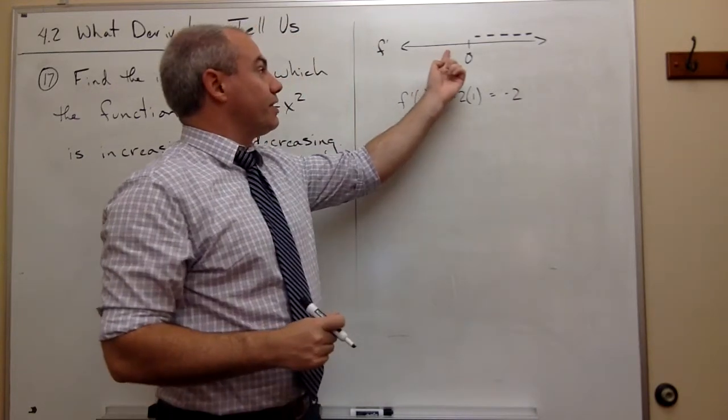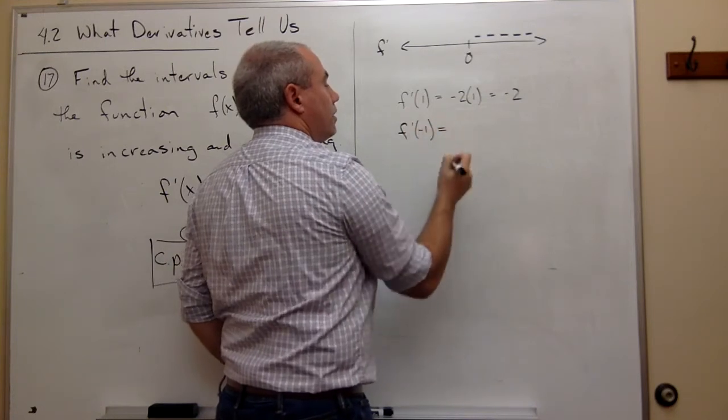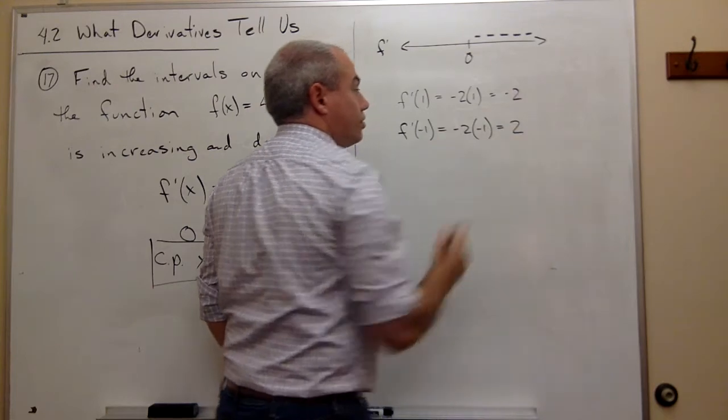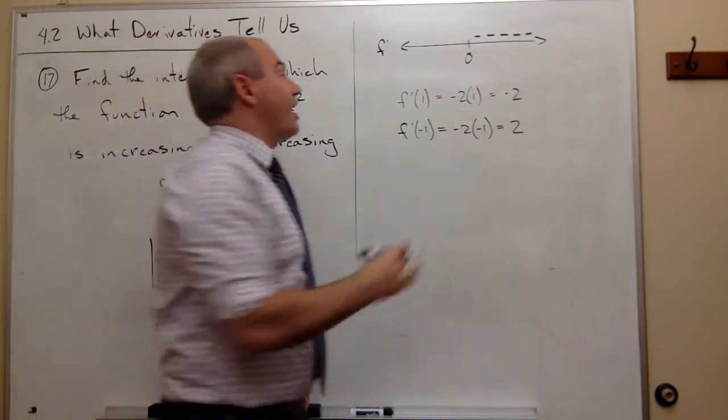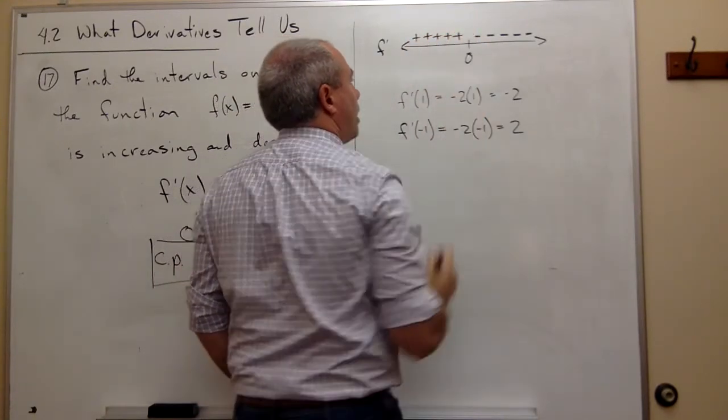Similarly, if I plugged in something over here like -1, then I'd get -2 times -1, which is 2, specifically positive 2. And so I know that everything over here in this region must be positive.